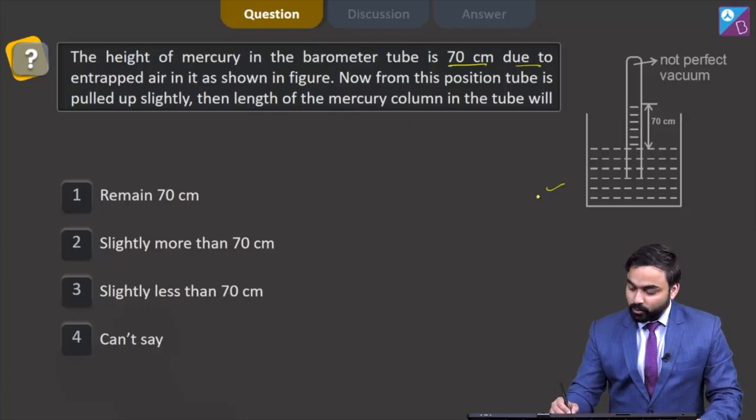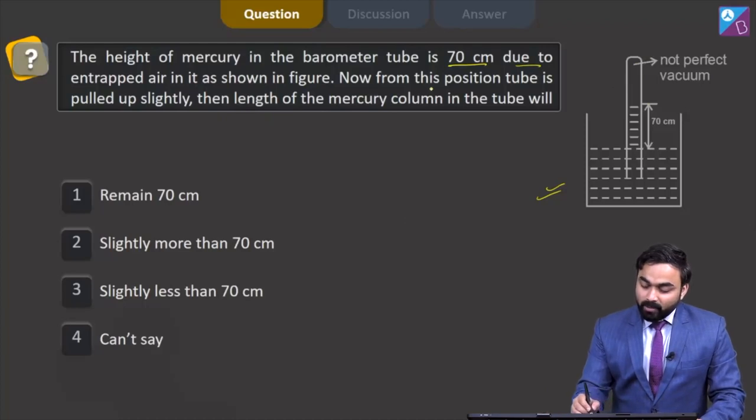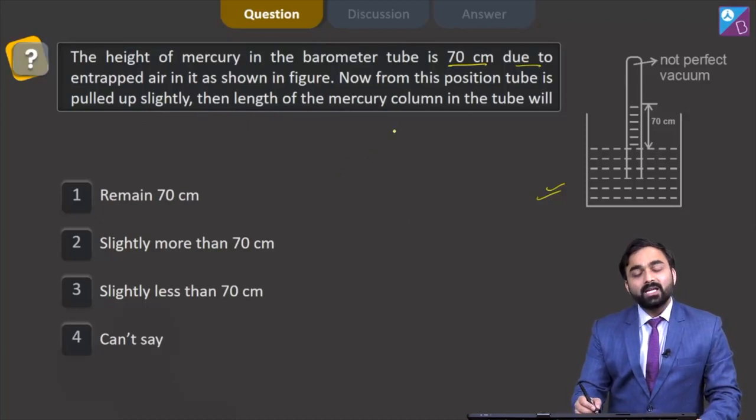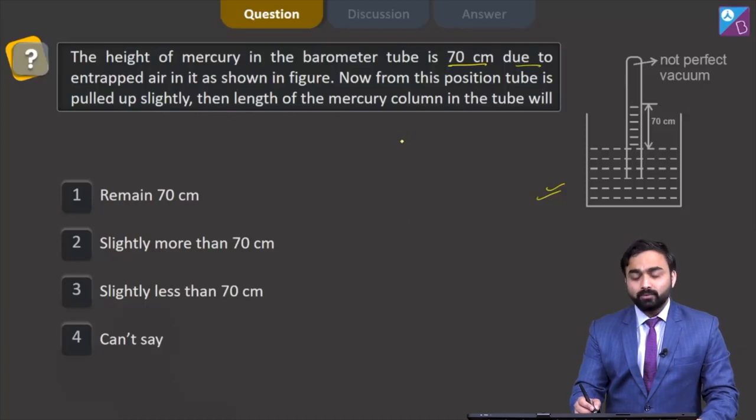This is the figure shown to you, here is air. Now from this position, the tube is pulled up slightly, then the length of the mercury column in the tube will... what will be the change in the length of mercury column? That I need to find out.